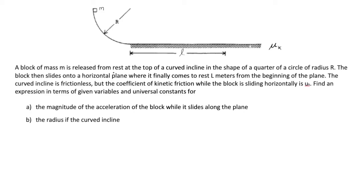A block of mass m is released from rest at the top of a curved incline in the shape of a quarter circle of radius R. The block then slides onto a horizontal plane where it finally comes to rest L meters from the beginning of the plane.